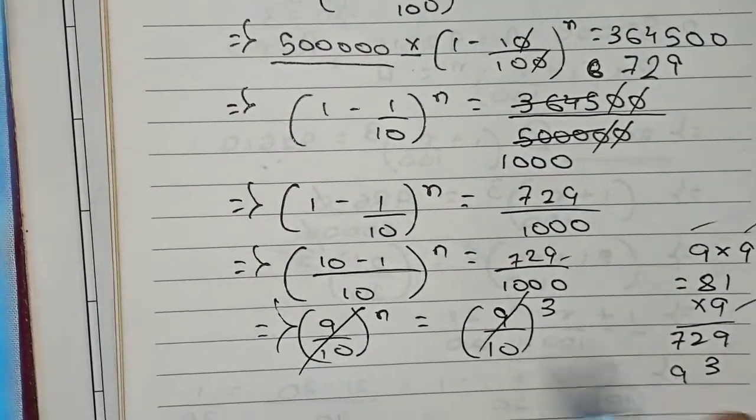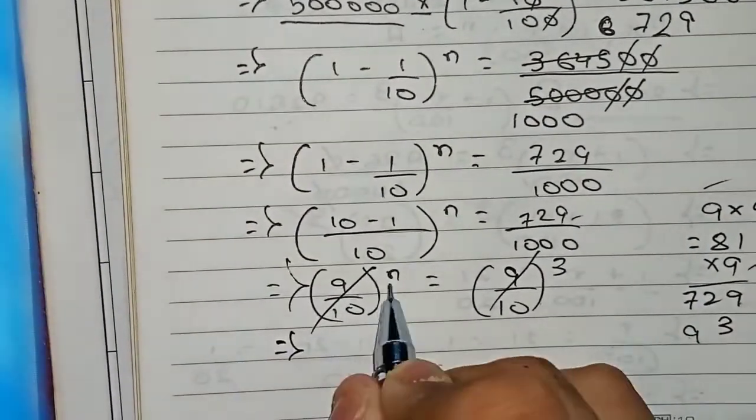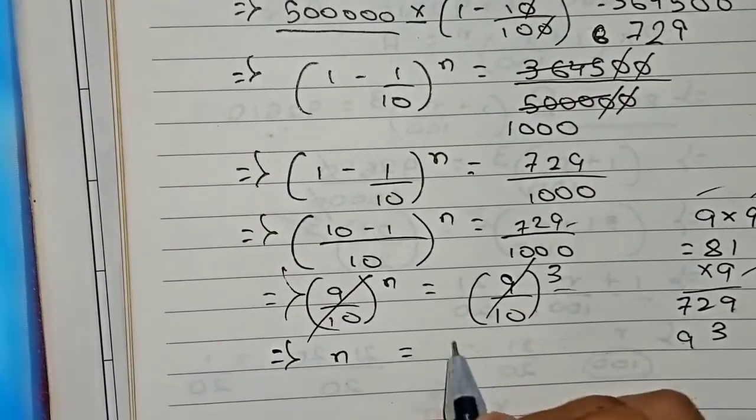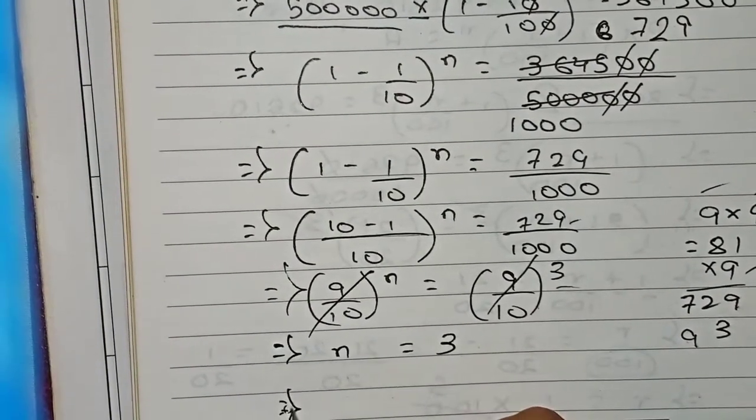Both bases are equal, so we can cancel the bases. Only n remains, which equals 3. Therefore, we can say that time will be equal to 3 years.